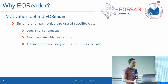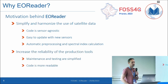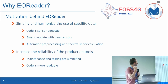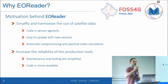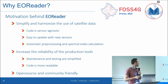The main point of EOReader is to simplify and harmonize the use of satellite data in order to make our code sensor-agnostic. It is also a way to update your algorithm with new sensors quite easily, because the brick that is dealing with data is not in your code — it's another library. We also had a need for automatic pre-processing and computation of spectral indices. It increases the reliability of our production tools because maintenance and testing are simplified. The code is more readable because when you get rid of all the ifs — if Sentinel-2, if Sentinel-3, if Sentinel-whatever — your code is just about the data task.